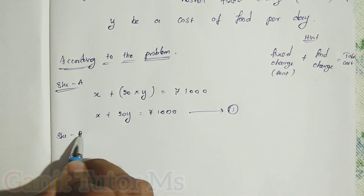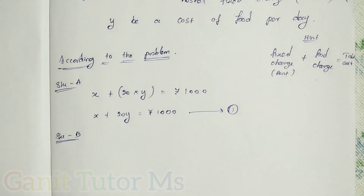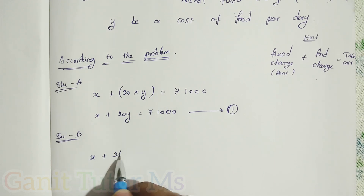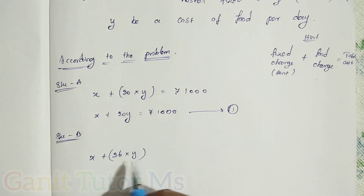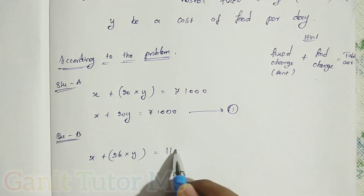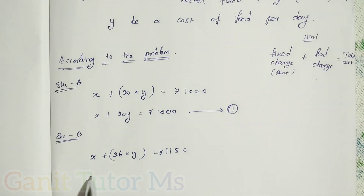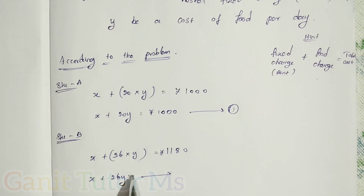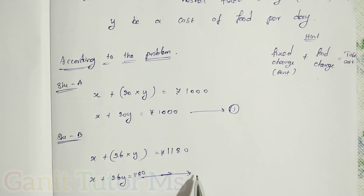Next is student B. Student B took food for 26 days and paid 1180 rupees. That means x plus 26 into y equals 1180 rupees. So x plus 26y equals 1180 — equation number 2.